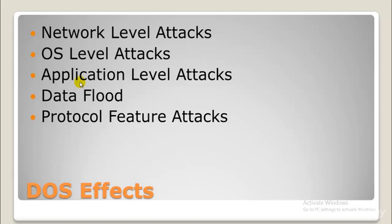In this tutorial we will be taking a look at the different levels of attacks. The levels of attacks can be at network level, operating system level, application level, and data flood and protocol feature attacks. Routers, IP switches, and firewalls — these attempts to exhaust hardware resources using multiple duplicate packets or software bugs are called different levels of attacks.